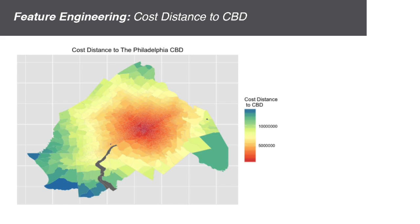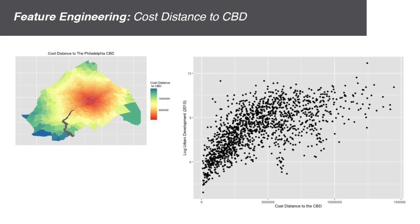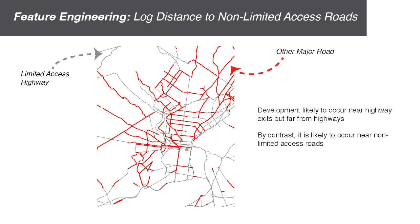I will now highlight a few of the variables included in this model. The first is the cost distance to the Philadelphia CBD, which weights proximity to the city center by road accessibility. As you can see, this variable is more closely fit with the dependent variable — the log of urban area in each census tract — in tracts that are closer to the city.